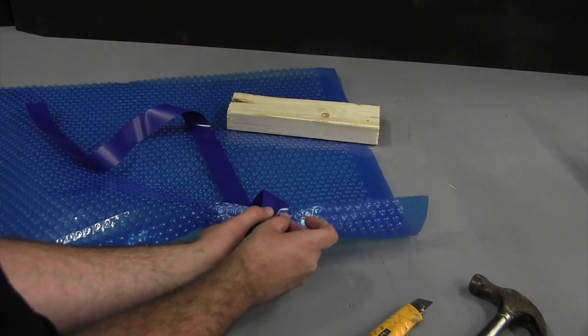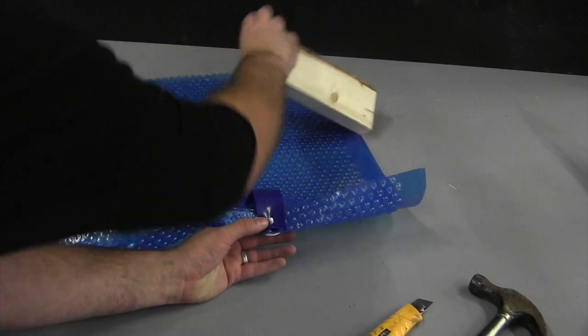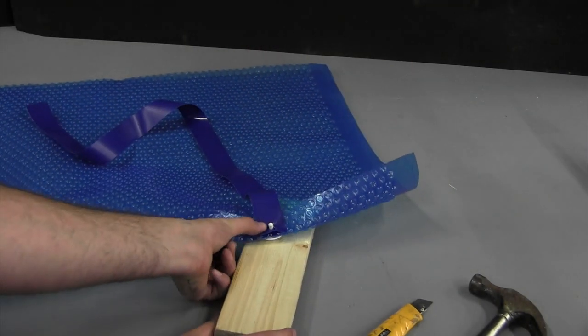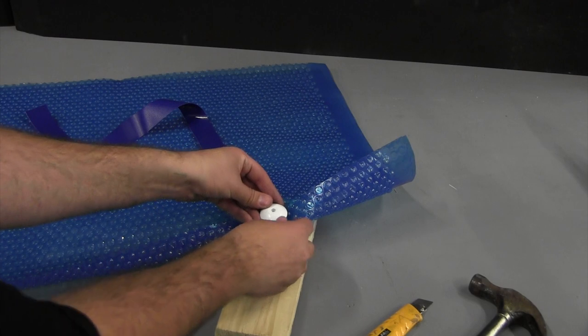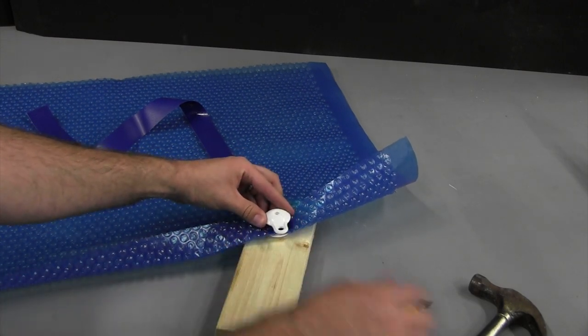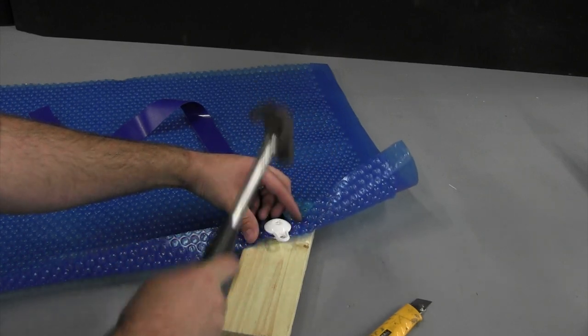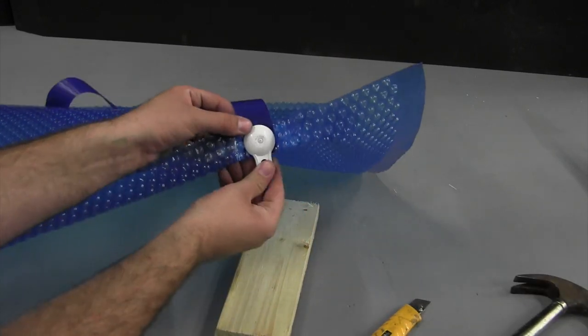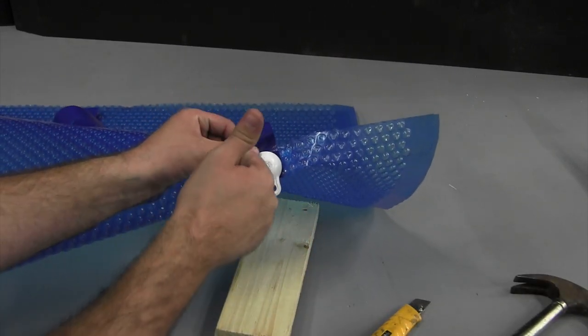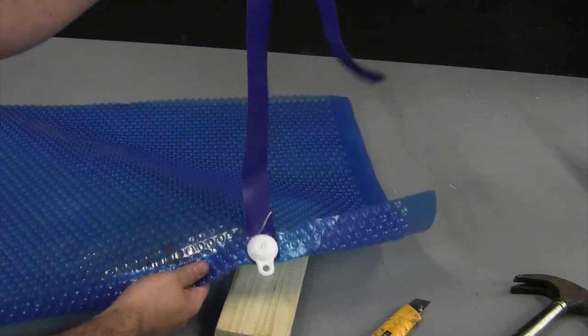Now, put a block of wood under the grommet and push the female side onto the male grommet. Then gently hit with a hammer until secure. Do not use excessive force or you may break the grommet.